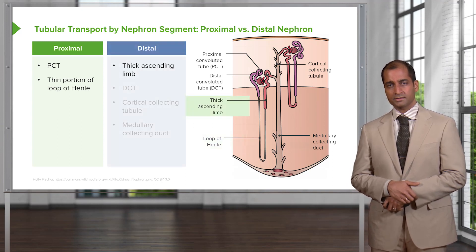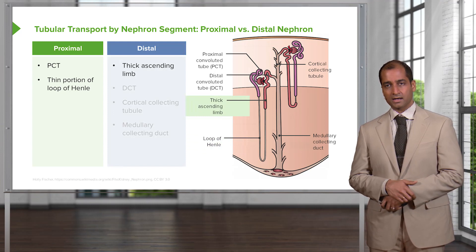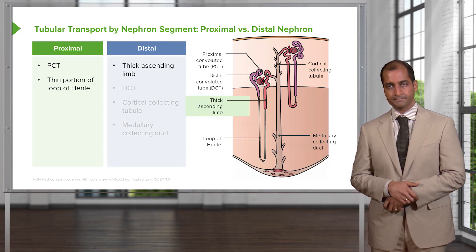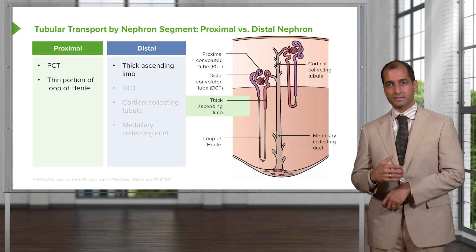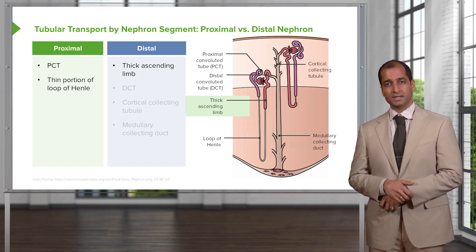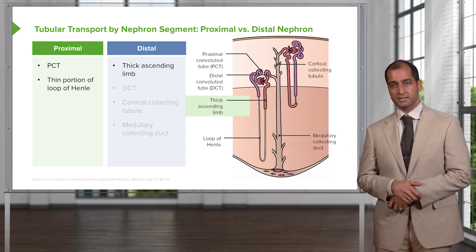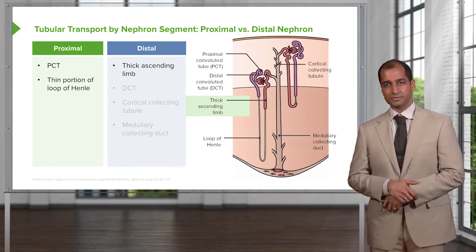The distal portion: here we'll begin our discussion of the thick ascending limb. The thick ascending limb, of course, has the most important symport known as sodium-potassium-2-chloride (NKCC2). We'll be spending more time with this region in a later lecture.